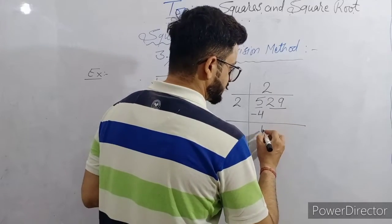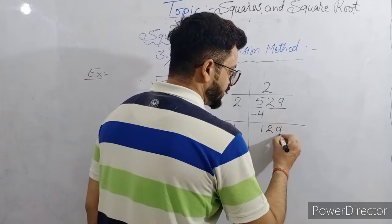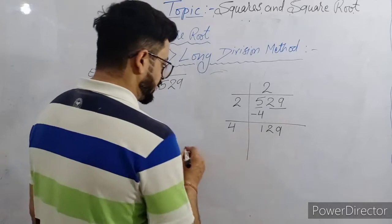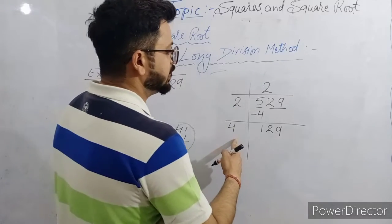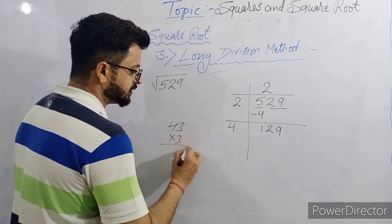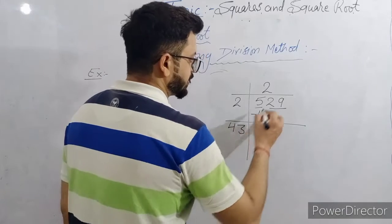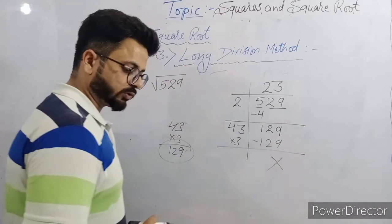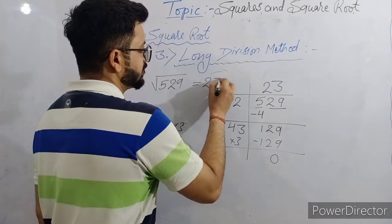We write 2 here and here also. The square of 2 is 4; we subtract, and 1 is left. Next step: double the 2 to get 4, and note down the next period 29, making it 129. What number should we place with 4 to get 129? Placing 1: 41 × 1 = 41 — no. Placing 2: 42 × 2 = 84 — no. Placing 3: 43 × 3 = 129. So 3 comes here, we multiply by 3, get 129, subtract — 0 remains.